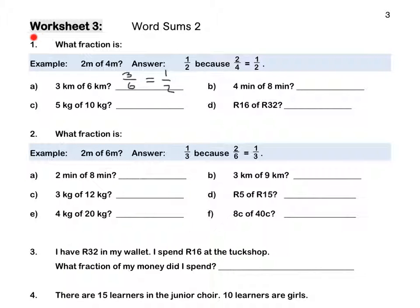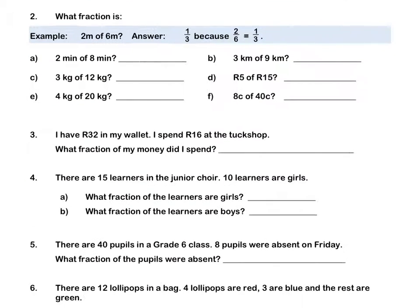Pause this video to complete Question 1. Question 2. What fraction is 2 metres of 6 metres? The answer is a third, because 2 out of 6 is equal to one third in simplest form. What fraction is 2 minutes of 8 minutes? It's 2 out of 8, which in simplest form is one quarter.